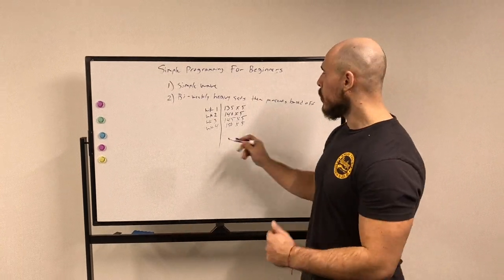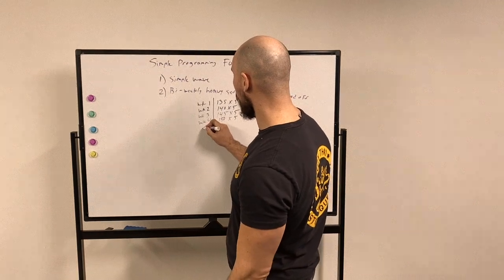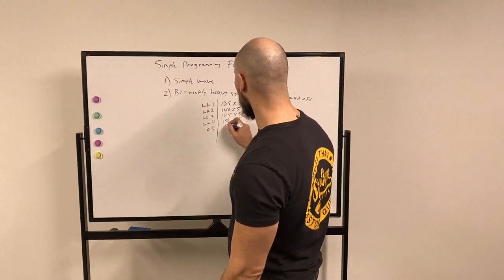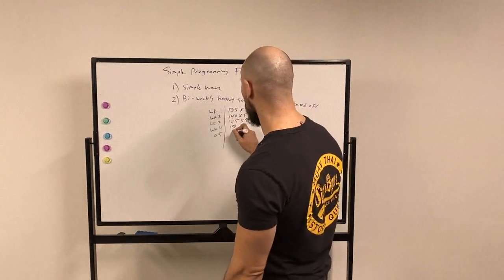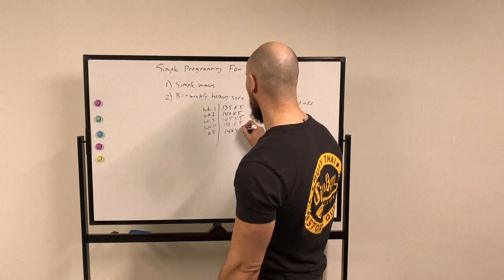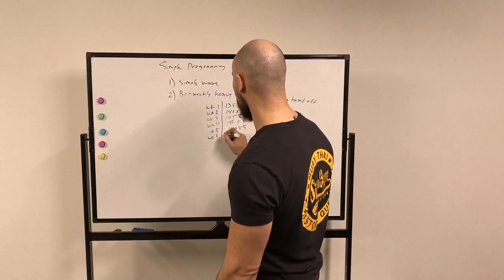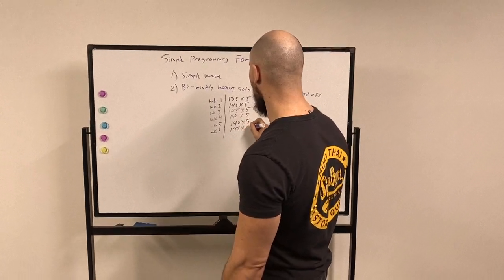On week five, I go back down to 140 pounds for sets of five. Week six, I go back up again, 145 pounds for sets of five. Week seven, I'm going back to 150 pounds for sets of five.